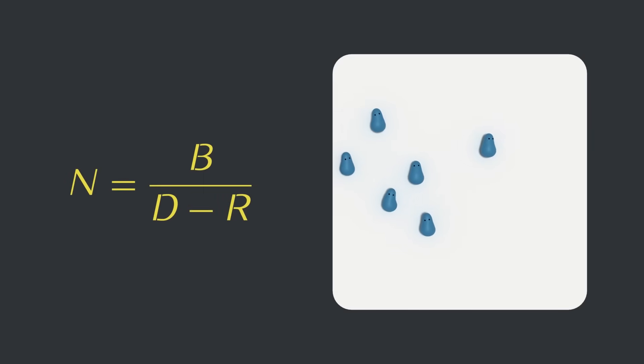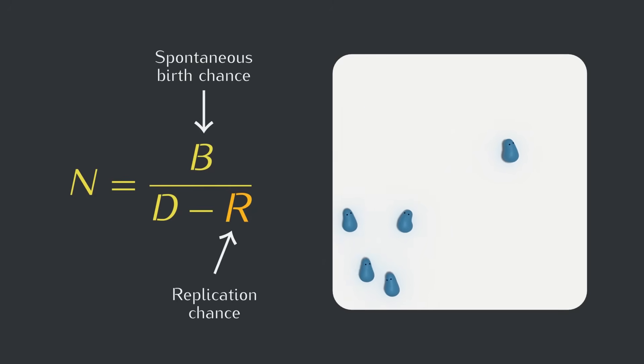In the last video, we used a simple model to predict the size of a population of creatures. That model had two ways for creatures to come into existence. The first was a spontaneous birth chance, which allowed creatures to pop into existence without any parent. The second was a replication chance, which allowed a live creature to create a copy of itself.